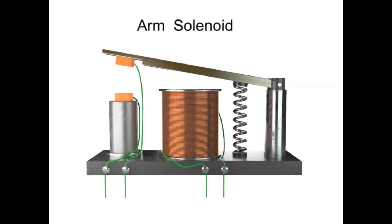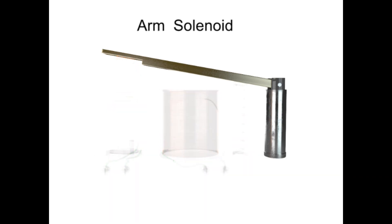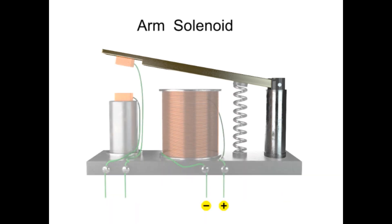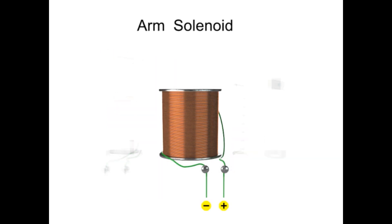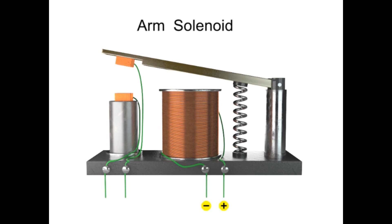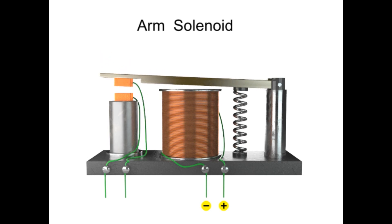Solenoids can also function to control a secondary circuit using a metallic arm. When an electrical current is passed through a coil surrounding a metal core, again a magnetic field is created. In this assembly, the metal arm moves toward the metal core.